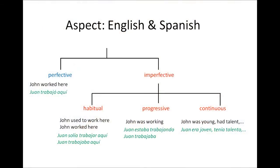John was working here — so I can say the same in Spanish: Juan trabajaba aquí, Juan estaba trabajando aquí. If I can say Juan estaba trabajando aquí, that's 'John was working here,' then I can use the imperfect: Juan trabajaba aquí. There's no problem — it corresponds exactly to the English.